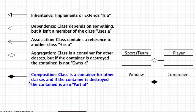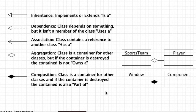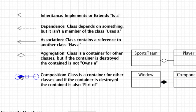Finally we have compositions and their relationship arrow. A composition occurs when a class is a container for other classes — like the window for your program — and if the container is destroyed the contained object is also destroyed. If we have a component that is inside of a window that makes up the whole of your program, and the window is destroyed, then the component inside the window would also be destroyed. That is a composition relationship. Hopefully those examples help clear things up.